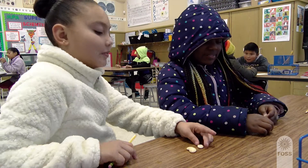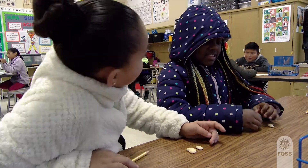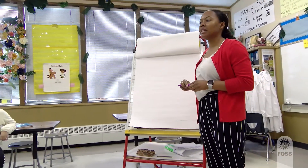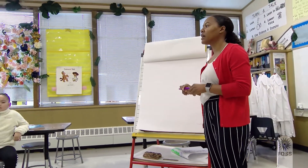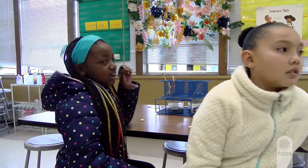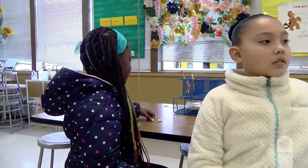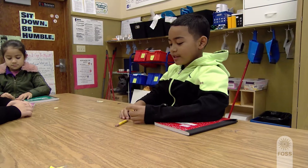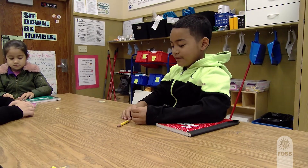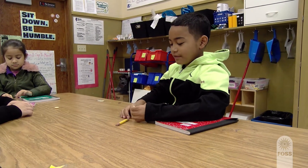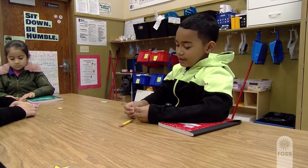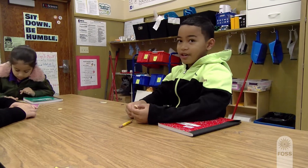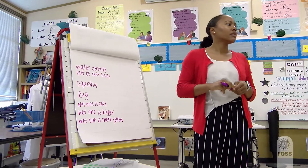Through a guided discussion, they raise questions about those observations. Teacher: What were some of the things that you observed? Student: That the dry one is smaller than the wet one. The wet one is soft, and the dry one is small and hard.